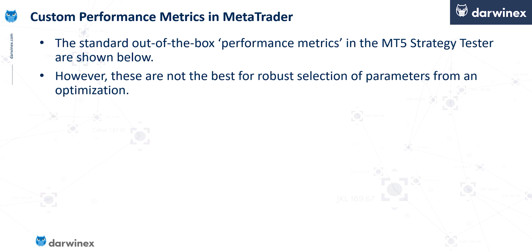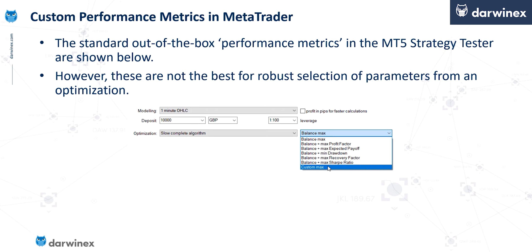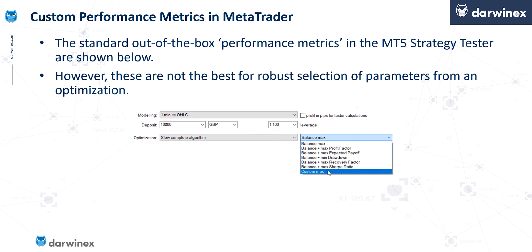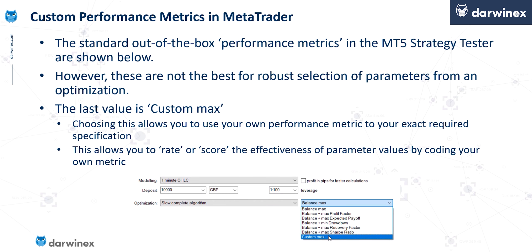Of course, in any backtesting software, you'll have a choice of performance metrics to use. Here you can see a list of the ones available in MT5. But often the default metrics available are not going to be the most effective for your optimisations, and traders are often better off writing their own performance metrics. That's exactly why MT5 provides this custom max option — whenever you select this, it enables you to use your own coded performance metric to rate or score the effectiveness of the parameter values you're testing.